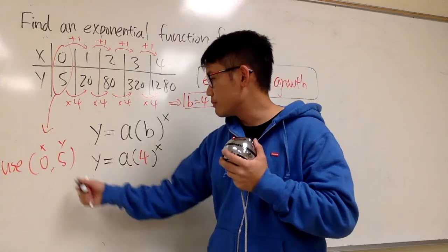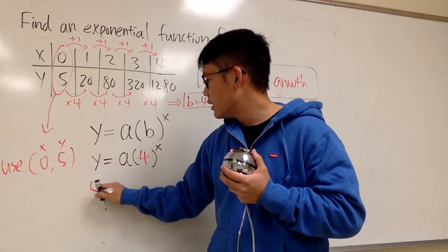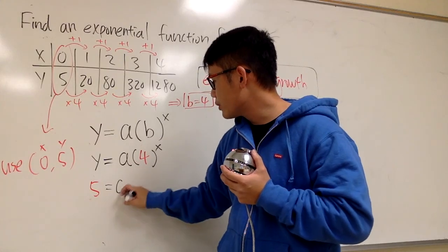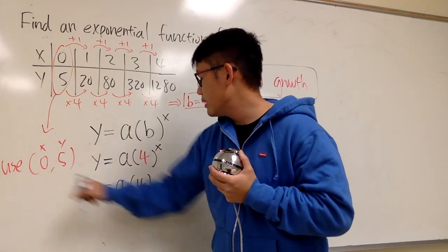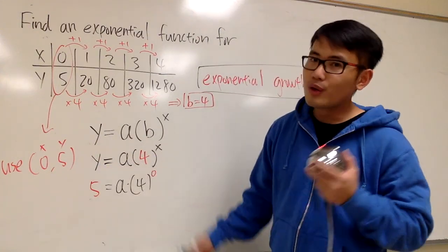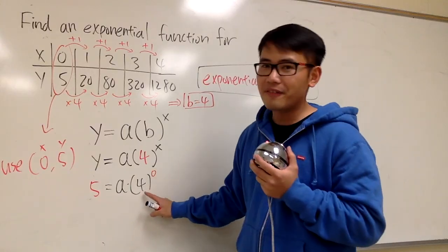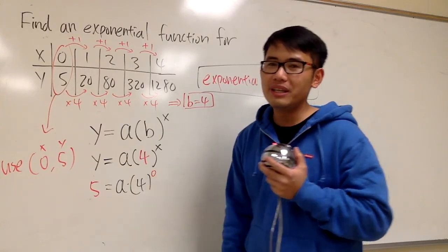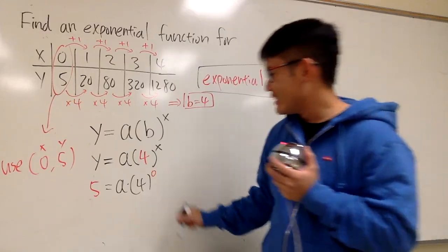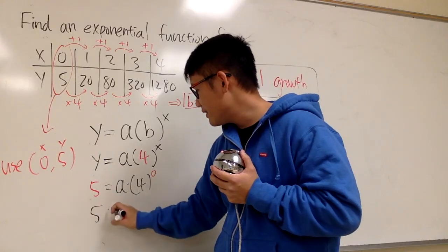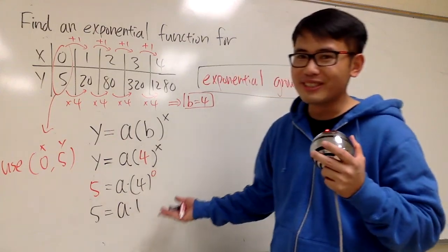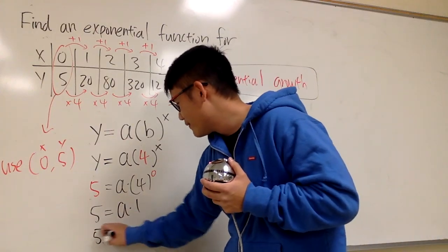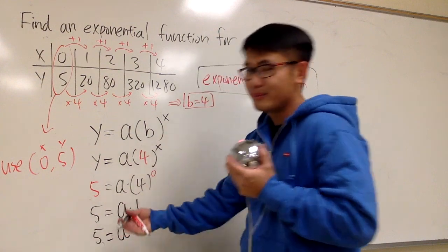And now I can just plug in 5 into y. And this is equal to a, I don't know yet, times 4. And the x is 0. Why is this so easy? Because we have 4 to the 0's power is just a 1, right? So this is just 5 equals to a times 1. A times 1 is just a. So this is just 5 is equal to a, a is equal to 5. Same thing.